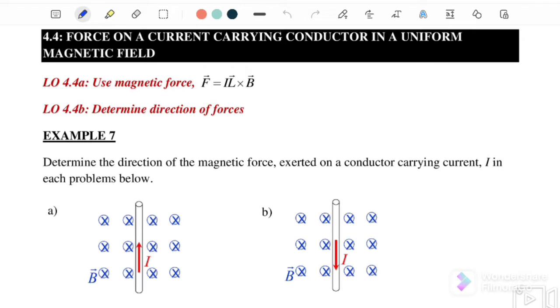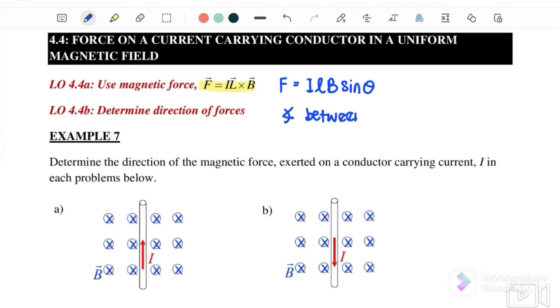For this subtopic, the equations that we will use is F equals IL cross B, or we can write as F equals ILB sine theta, where the angle theta here is between vector L and also vector B.